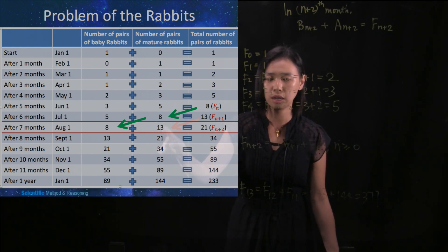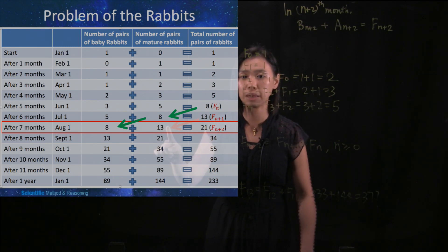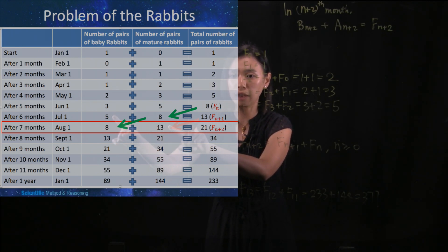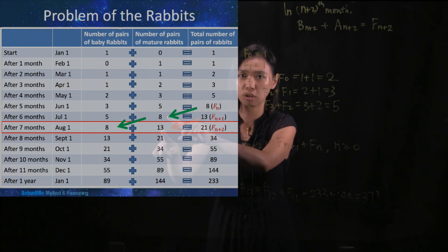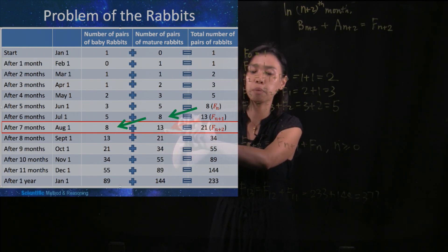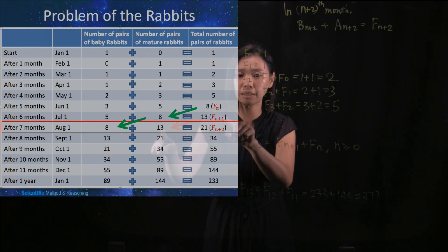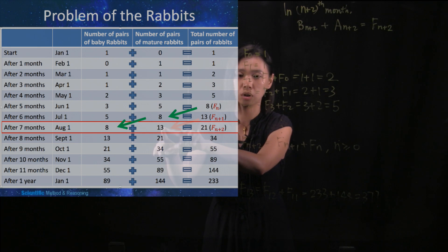But then the question is, why is this 13 the same as F(n+1)? That 13, which is the number of pairs of mature rabbits, is coming from the 5 and the 8 added together. This 5 is the number of pairs of baby rabbits in the previous month, and this month all of them are going to be matured. And this 8 is the number of pairs of mature rabbits — they have already matured, so they will also be mature this month. So 5 plus 8, which is 13, the total number of pairs of rabbits in the previous month, are going to be the number of pairs of mature rabbits in this month. So F(n+1), no matter whether they are babies or matured, in the next month they will all be matured.